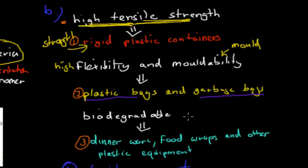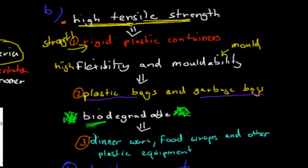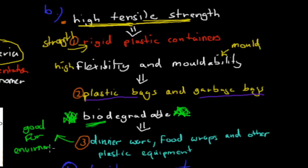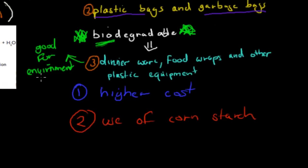Probably the most important property is that PLA is biodegradable — it will break down over time. Unlike plastics from petroleum which can last thousands of years, PLA breaks down in a couple of years, which is much faster and better for the environment. This means we can make dinnerware, food wraps, and other plastic equipment that will break down, making it environmentally friendly.